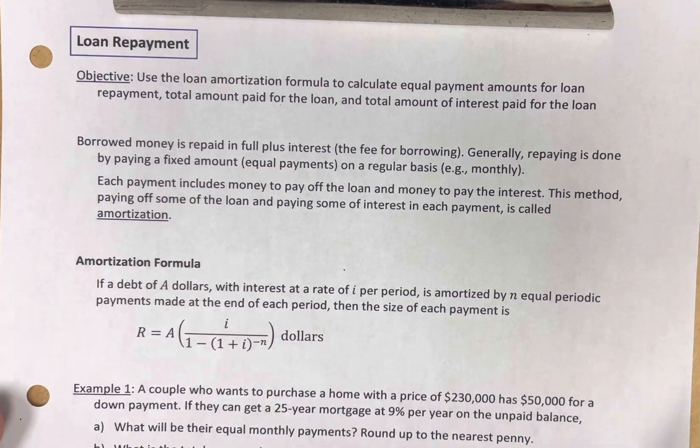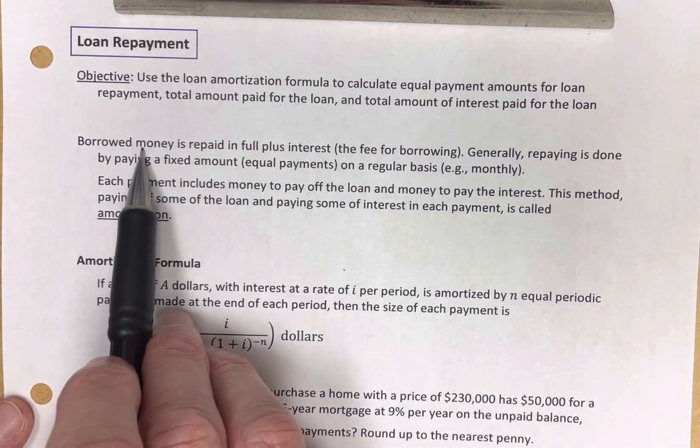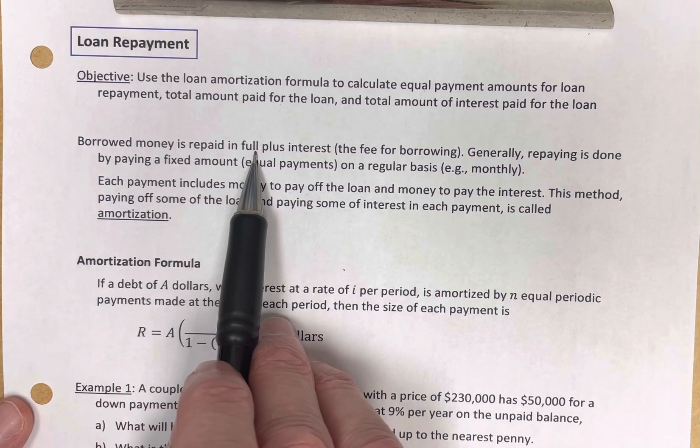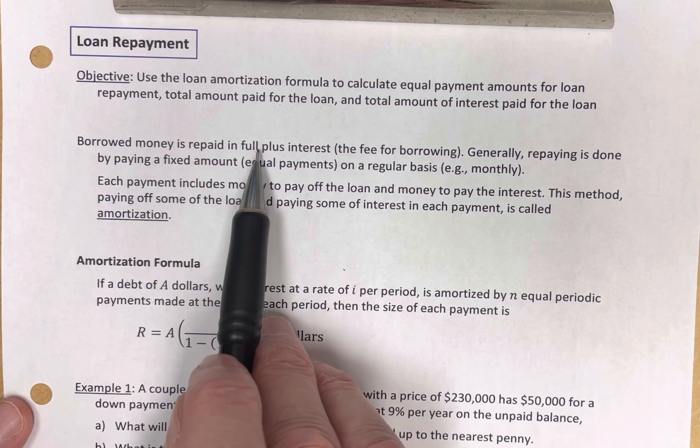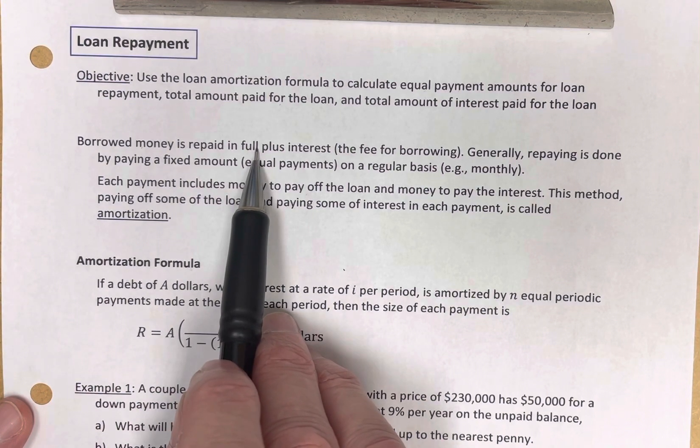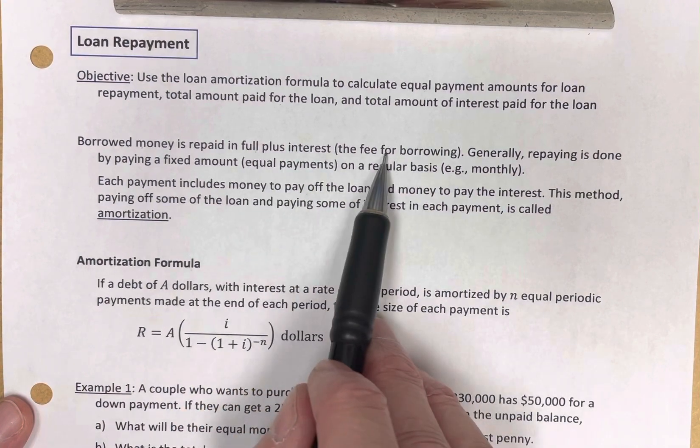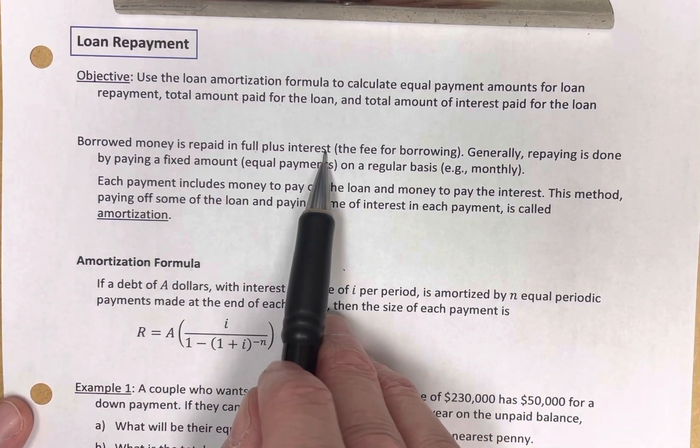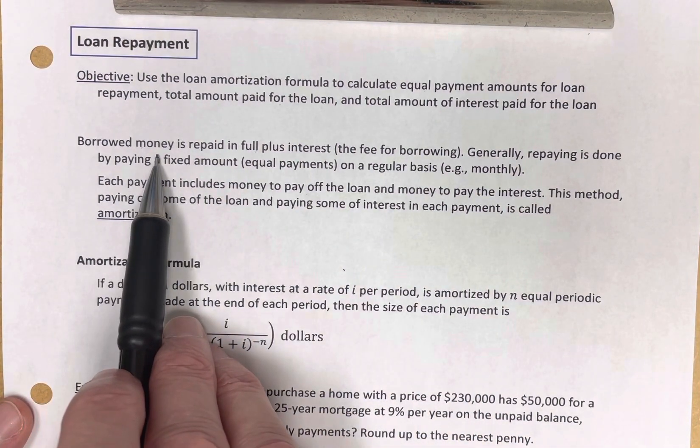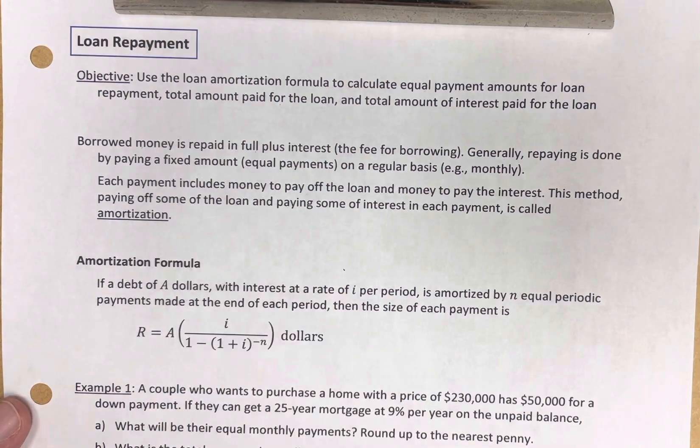Just as a brief reminder, borrowed money is repaid in full, of course. You borrow $10, you're going to repay somebody $10. If you borrow from an institution that charges a fee for borrowing, called interest, then borrowed money is paid in full, plus the interest.